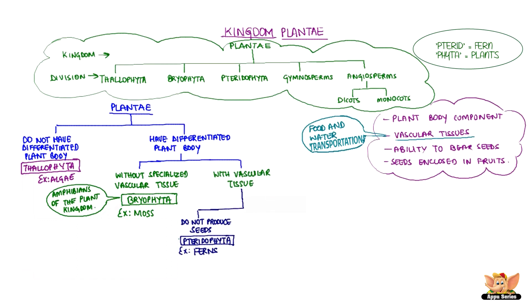Therite in Greek means fern and Phyta indicates plant. The plant body of Pteridophyta is differentiated into roots, stem, and leaves. Pteridophytes have vascular tissues. Ferns are examples of Pteridophyta; people grow ferns in pots for decorative purposes.